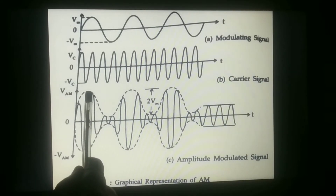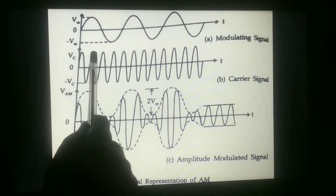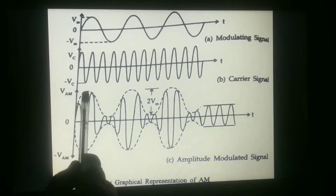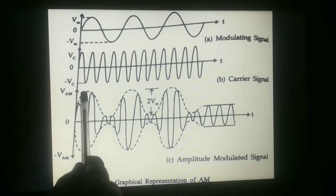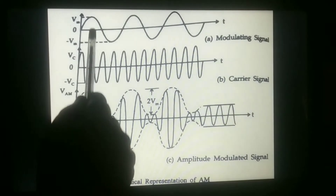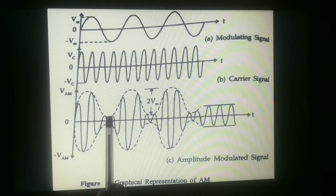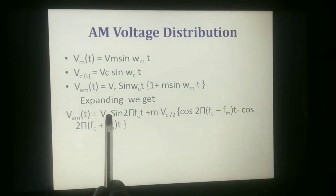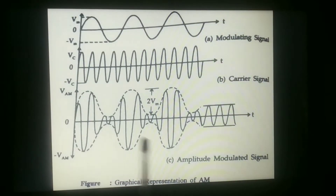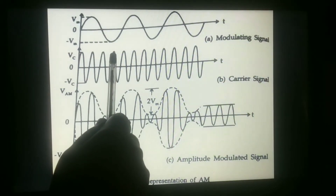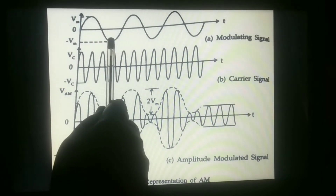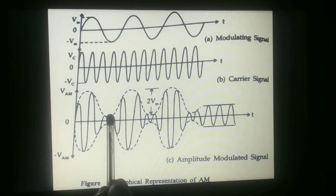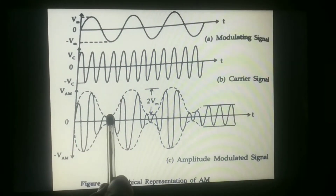The maximum voltage varies from Vc plus Vm — this is the peak point. So the maximum voltage Vmax is nothing but Vc plus Vm. The minimum voltage Vmin is nothing but the amplitude varies from Vc minus Vm. The minimum point is here, so the minimum voltage is Vc minus Vm.